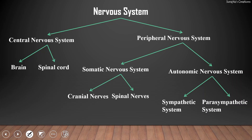Hello viewers, let us learn more about the nervous system. The nervous system can be studied as central nervous system and peripheral nervous system. The central nervous system is constituted by the brain and the spinal cord. The peripheral nervous system is divided as somatic nervous system and autonomic nervous system. The autonomic nervous system constitutes sympathetic nervous system and parasympathetic nervous system.